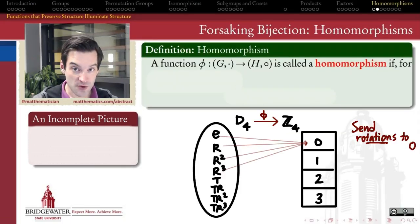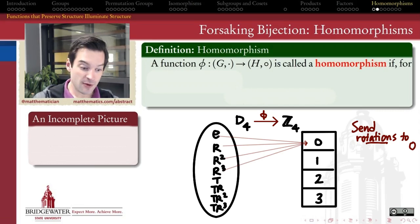If we want that function to preserve structure between these two groups, one of the more important things we want it to do is send the identity element of the first group to the identity element of the second group. So the identity transformation of the square should get sent to the identity element of Z4, which is the number 0 mod 4. And if the identity is getting sent there, and I want to group it together with the other rotations that are not flipping my square over, then those rotations should all be getting sent to 0 also.